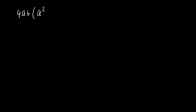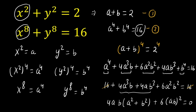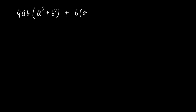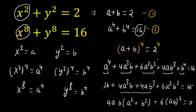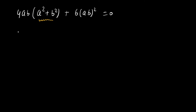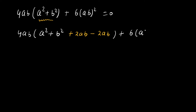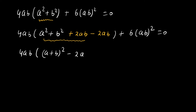So 4ab multiplied by (a² + b²) plus 6ab² equals 0. We know that a + b = 2. If we add and subtract 2ab inside, then a² + b² + 2ab is (a + b)² minus 2ab. So 4ab times [(a + b)² − 2ab] + 6(ab)² = 0.